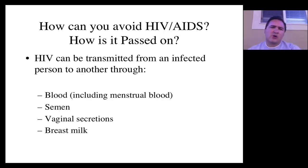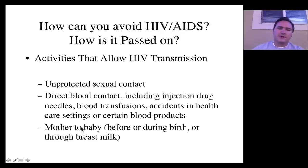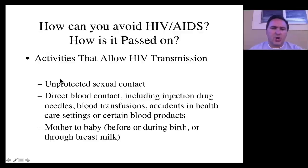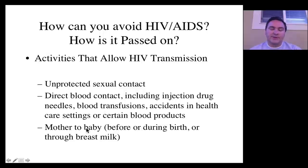So many people ask: how can you avoid HIV? Well, you think about how it's passed on. HIV can be transmitted through these liquids: blood, semen, vaginal secretions, and milk. So basically, if you avoid activities that allow the transmission of HIV, then you can avoid contracting HIV. No unprotected sex, no direct blood contact including drug needles and transfusions. And then also there's that chance of mother-to-baby transmission.